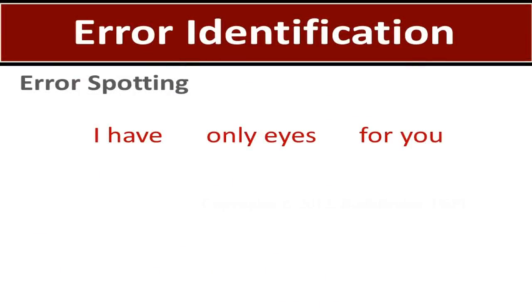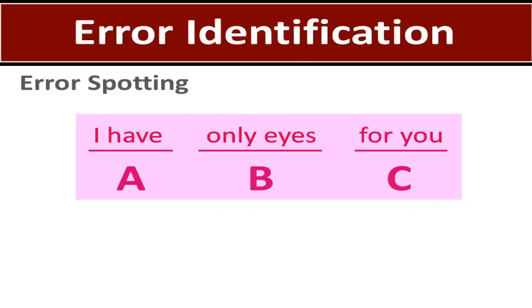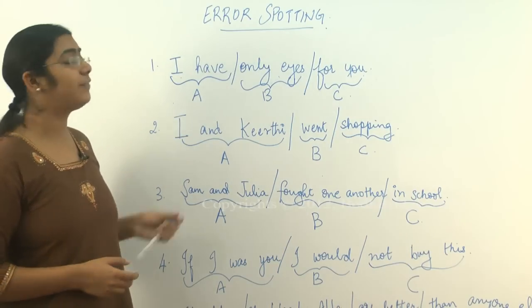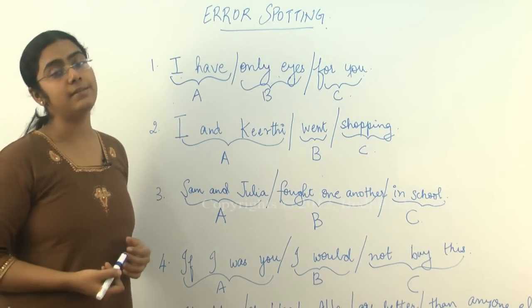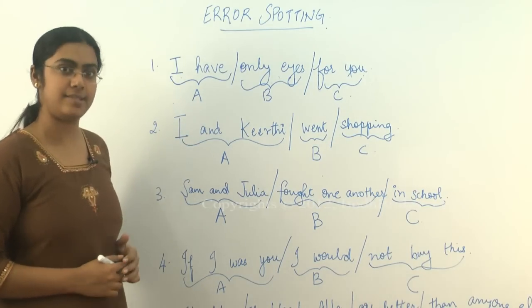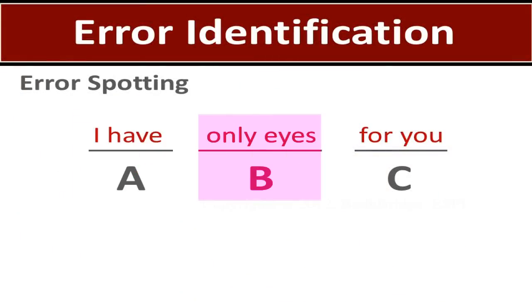I have only eyes for you. I have, that's one part; only eyes, that's the next part; for you. Now, do you think any of these parts A, B, or C has an error in them? So if that's the case, if you think there is an error, you point out where the error is. It can be A, B, or C.